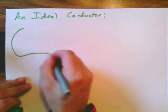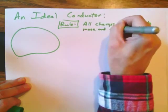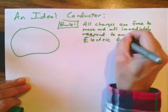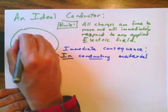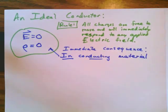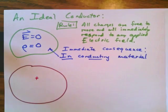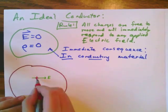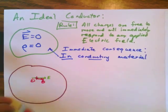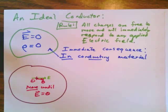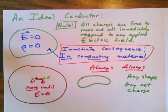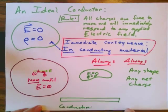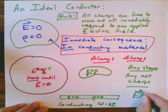In contrast, an ideal conductor is a material where all charges are free to move and will move immediately in response to any applied electric field. The immediate consequence is that the electric field inside a conducting material is always zero, and the charge density inside the material is always zero. If any electric field were applied, charges would move and keep moving until that field was cancelled out. This is true regardless of the shape of the conductor — whether it's a potato, a circle, or a conducting wire — the electric field and charge density inside are zero.